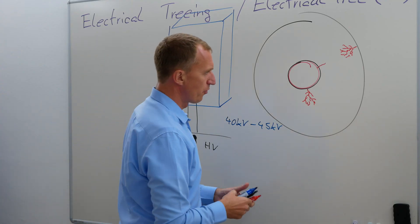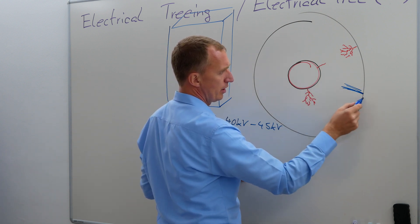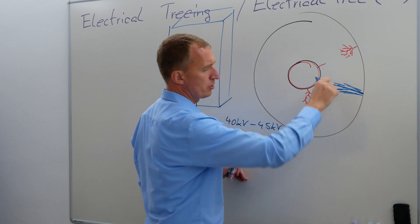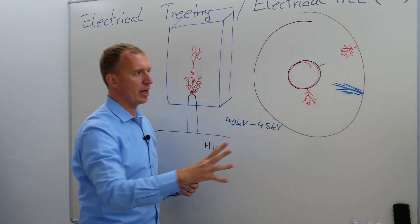What happens is, if you have water ingress, it can come from the inside or from the outside, and you have like a water tree going here. Usually it doesn't have so many branches. What happens is, the electrical field will change.